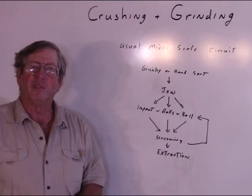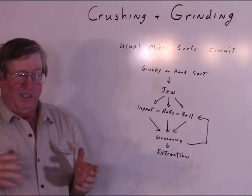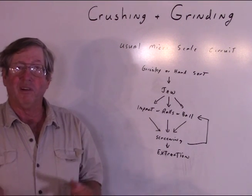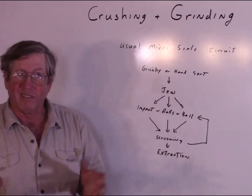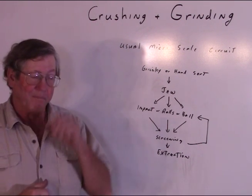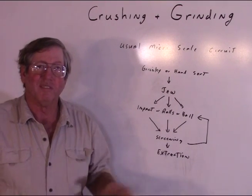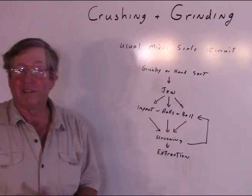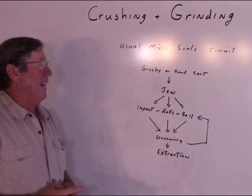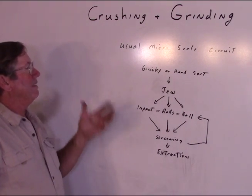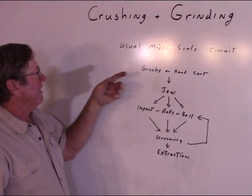Now that you've seen them in action, let's get down to some more specific application. We're dealing with very small to small operations — fractions of a ton an hour to a couple tons an hour. Those constraints pretty much define what we're going to do, along with economic constraints that define it further.